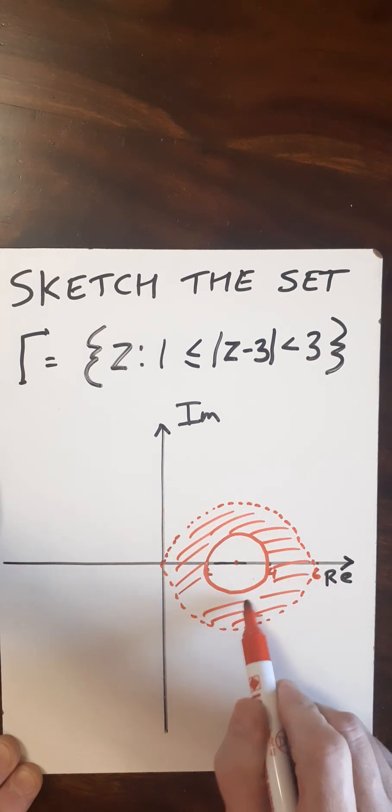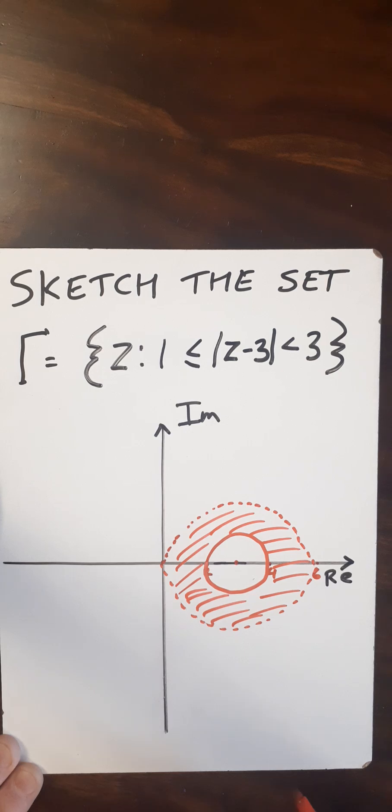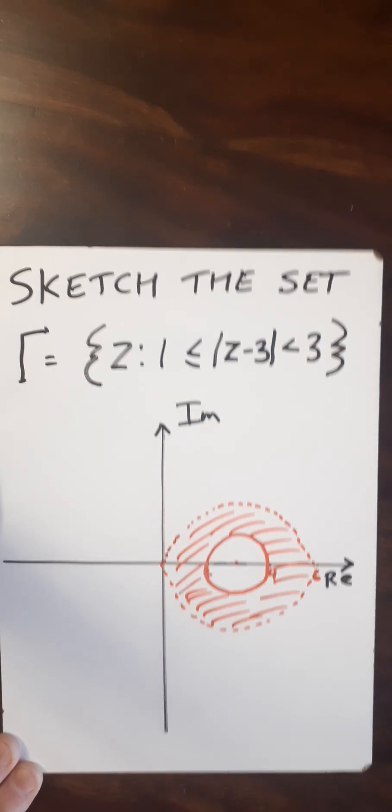And then my set for this will be the bits enclosed inside the annulus. So that there, the sketch points will tell me where my sketch of the set gamma will be included.